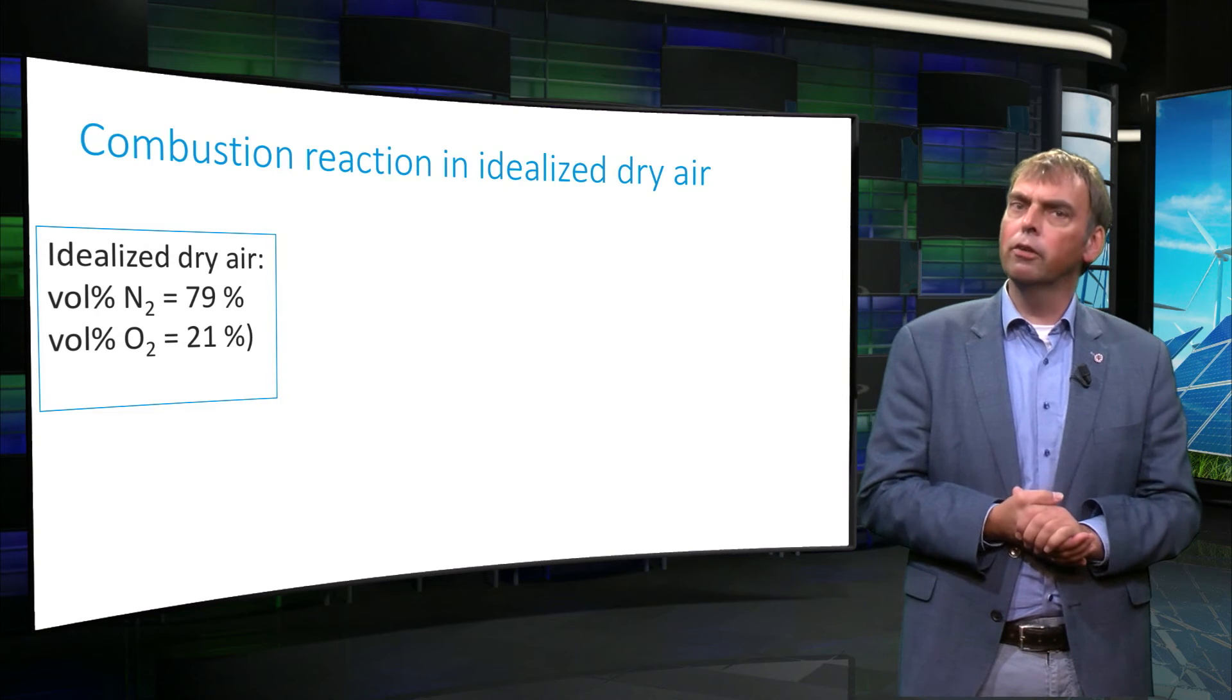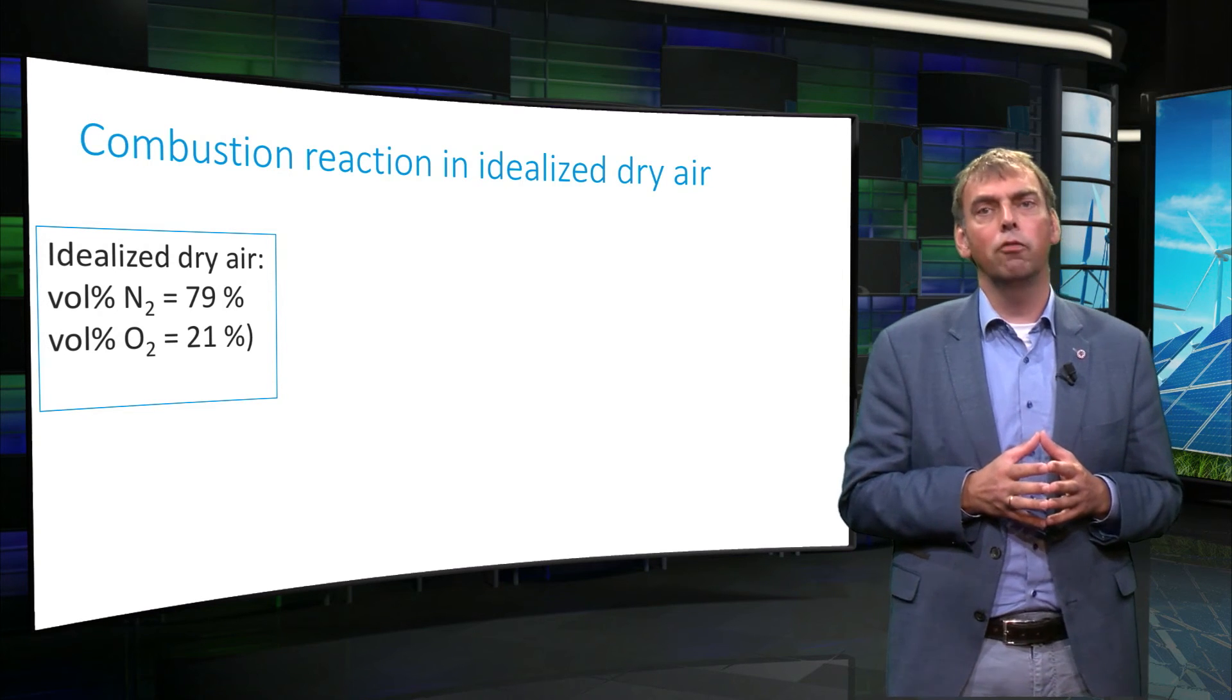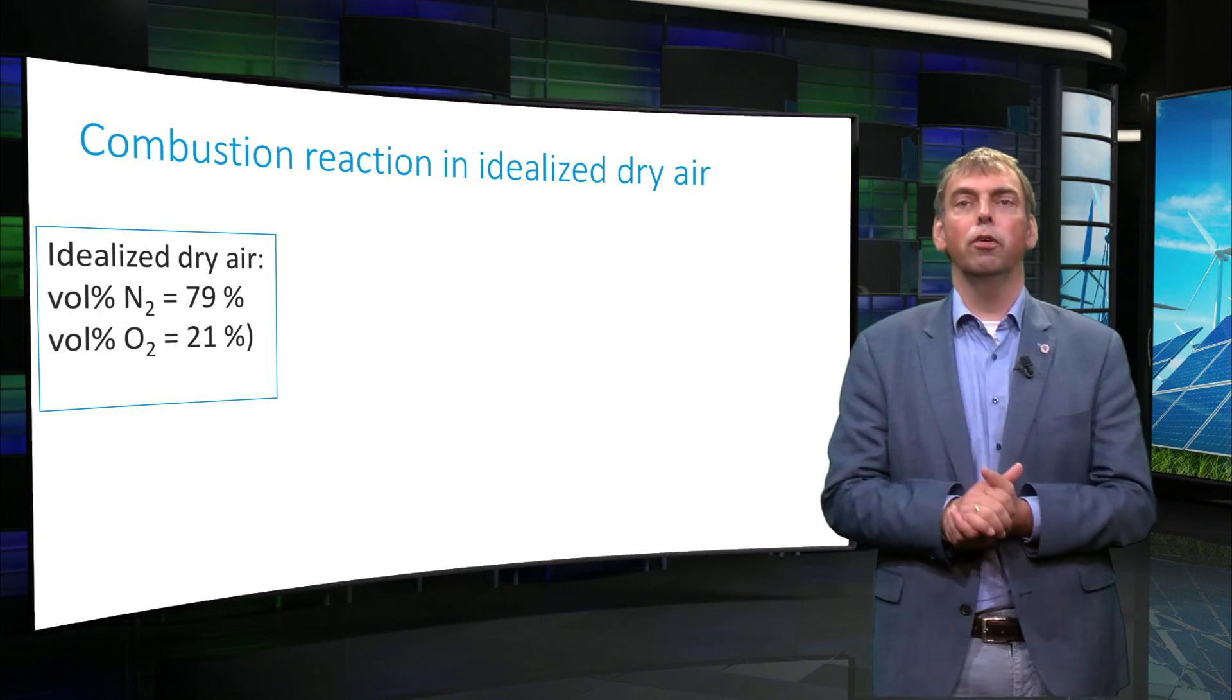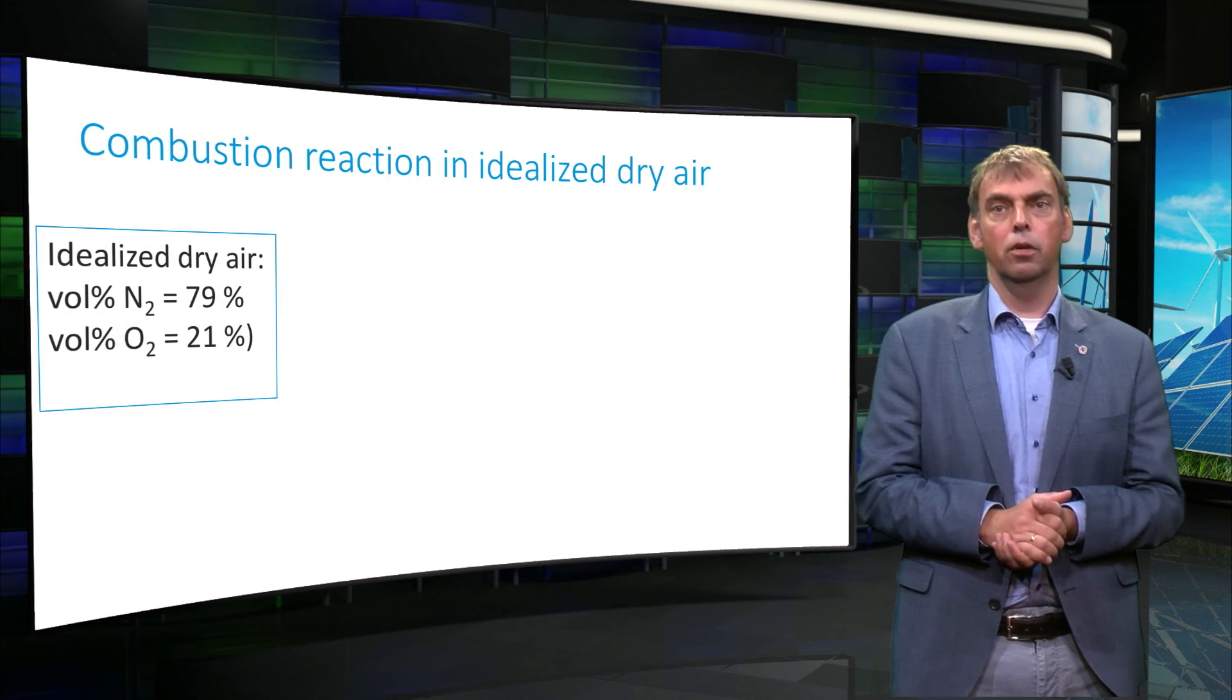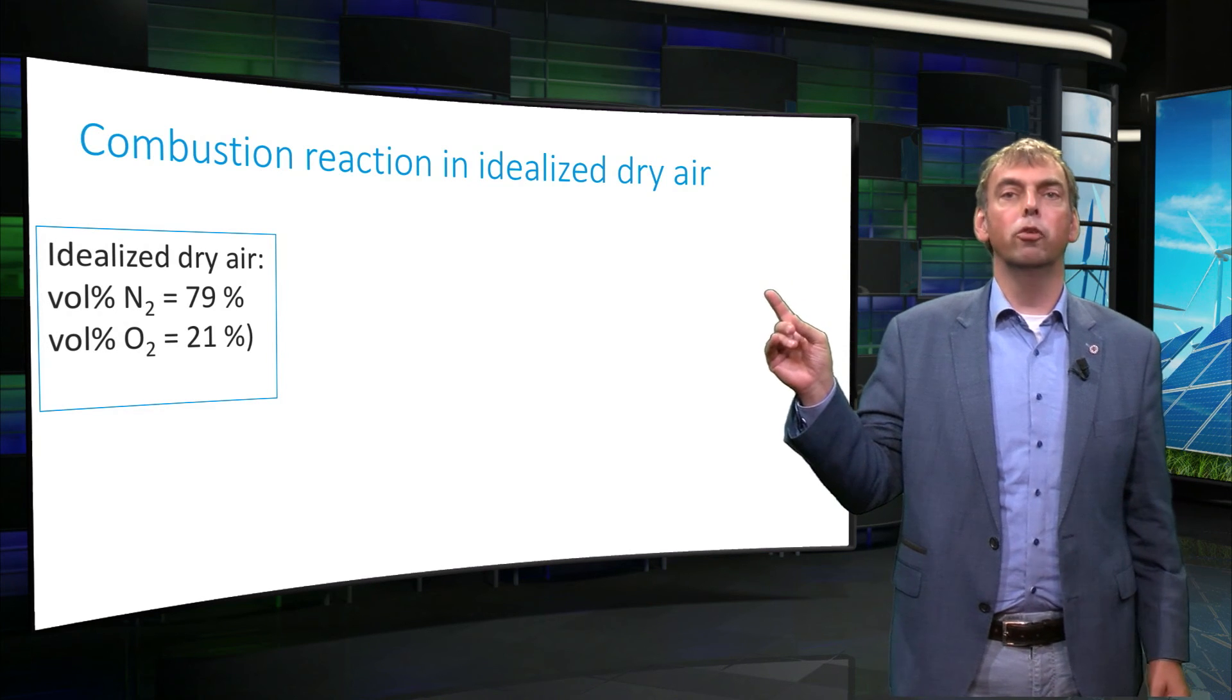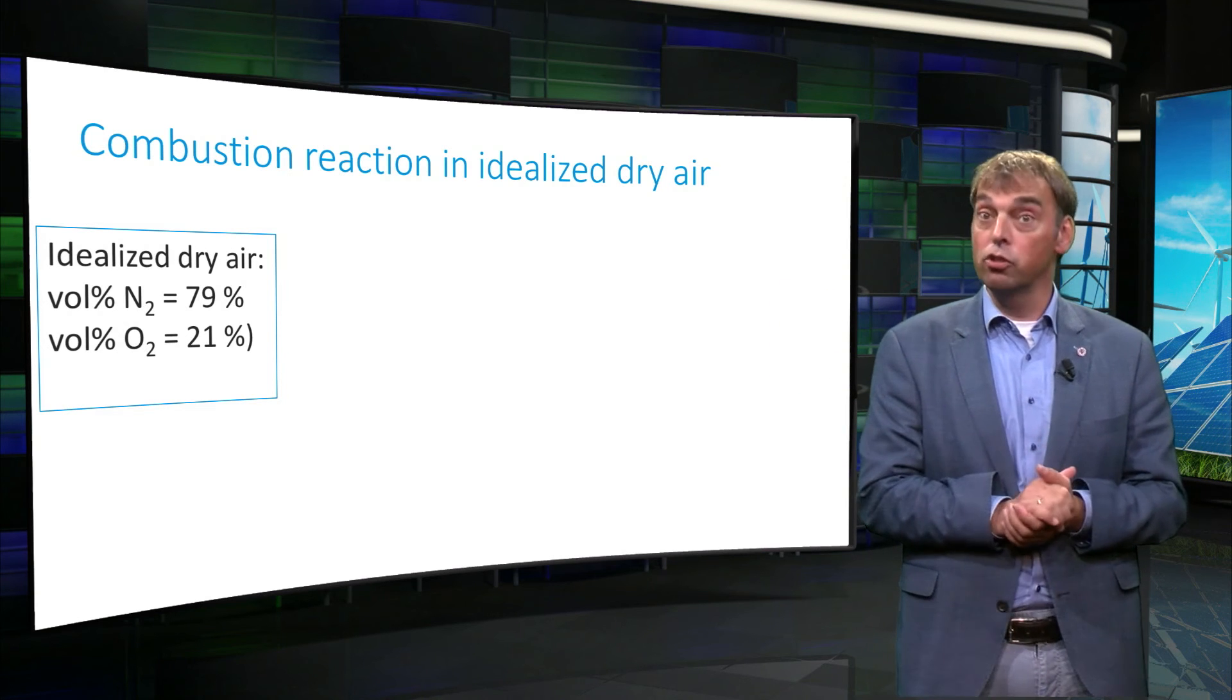In combustion calculations we often assume the air to be composed of 79 volume percentage of nitrogen and 21 volume percentage of oxygen. We can write out the combustion reaction equation, assuming biomass to consist of carbon, hydrogen, and oxygen only.